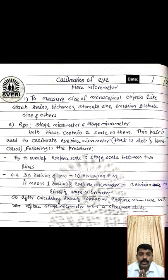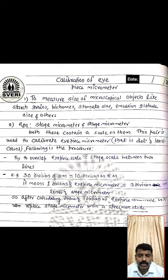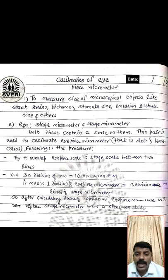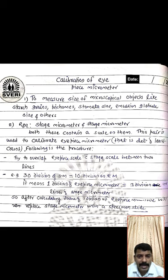There is one scale horizontally designed on the stage micrometer, and the same is designed on the eyepiece micrometer. The stage micrometer has a known length — for example, 0.1 micrometer or 0.01 micrometer per division. You have to determine the value of one line or one division of the eyepiece micrometer.